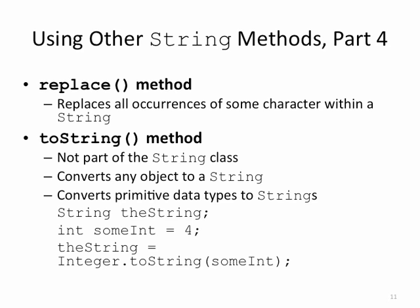The replace method replaces all occurrences of some character within a string. The toString method will return an object as a string.